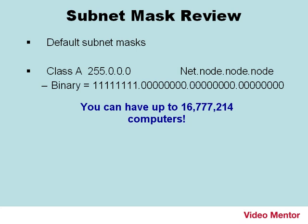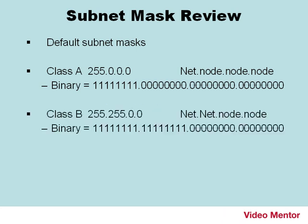In binary, there would be eight ones and 24 zeros. Class B default is 255.255.0.0, so the first two octets deal with the network portion, and the last two deal with the node portion. In binary, we have 16 ones and 16 zeros.